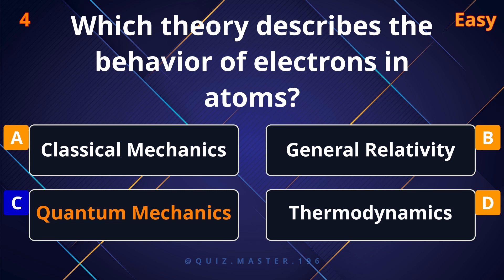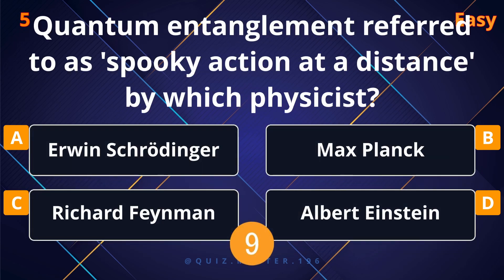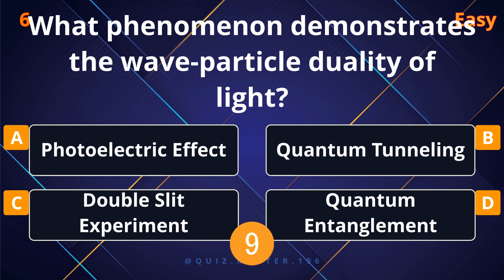Which theory describes the behavior of electrons in atoms? Quantum mechanics. Quantum entanglement was famously referred to as spooky action at a distance by which physicist? Albert Einstein.